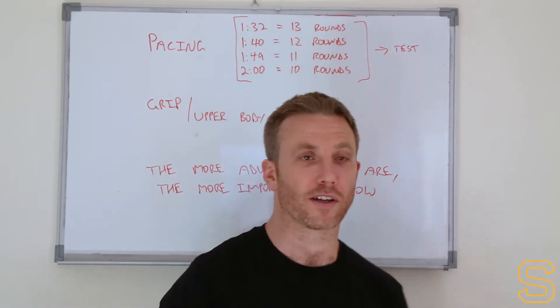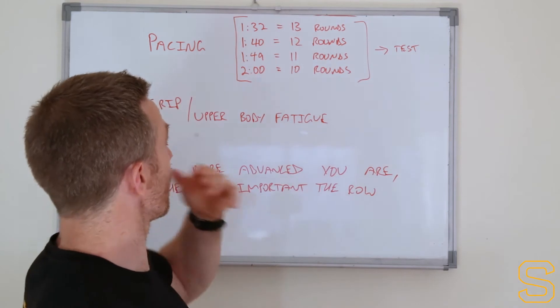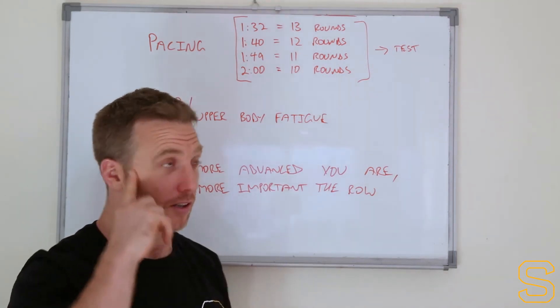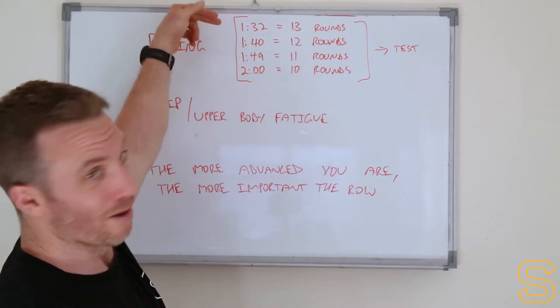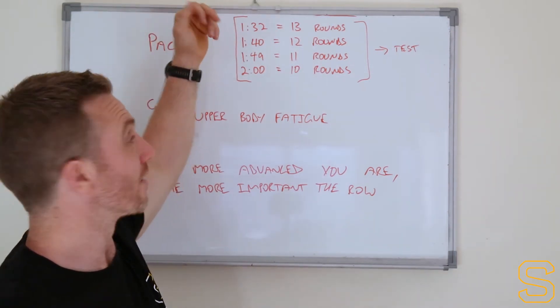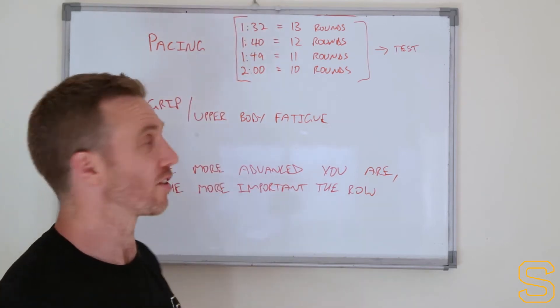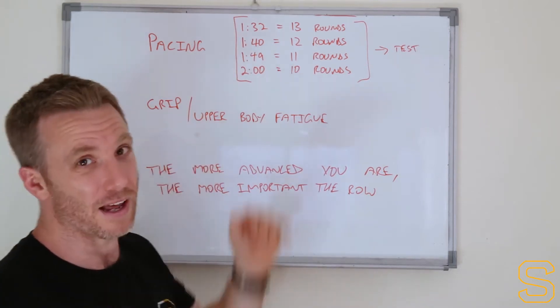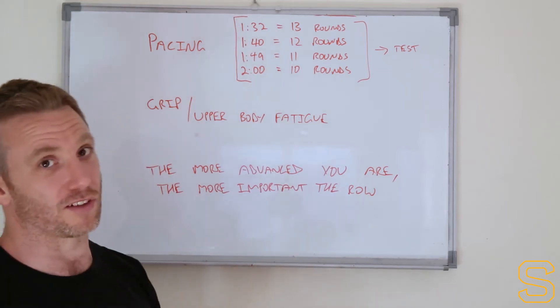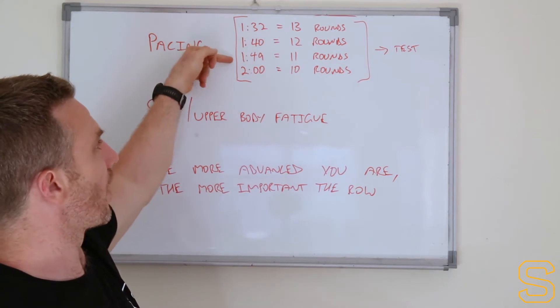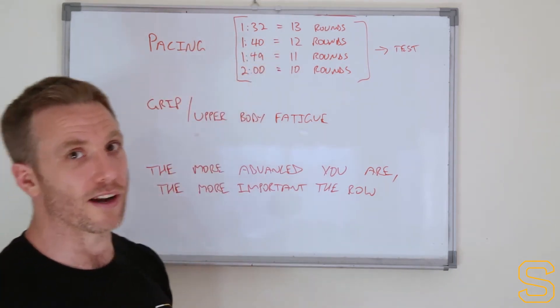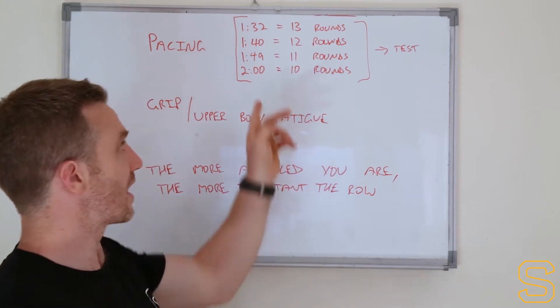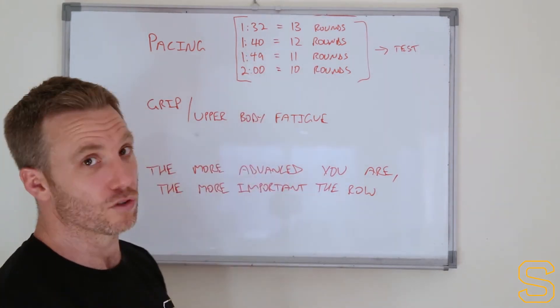With that in mind, if you're trying to get ballpark numbers, from looking at it, it looks like 13 plus rounds is a best in the world type score. If you're up with those kind of people, you need to be doing like a 1:32 round. 1:40 rounds will get you 12 total rounds, and I think a lot of you guys watching this video, if you're shooting for spots at regionals, you need to be thinking around about that kind of pace, maybe a little bit slower. Working back from there, 1:49 per round will give you 11 total rounds. If you're looking at contending in terms of maybe being on a team for regionals or something like that, I think you need to be getting at least something like 11 plus rounds.